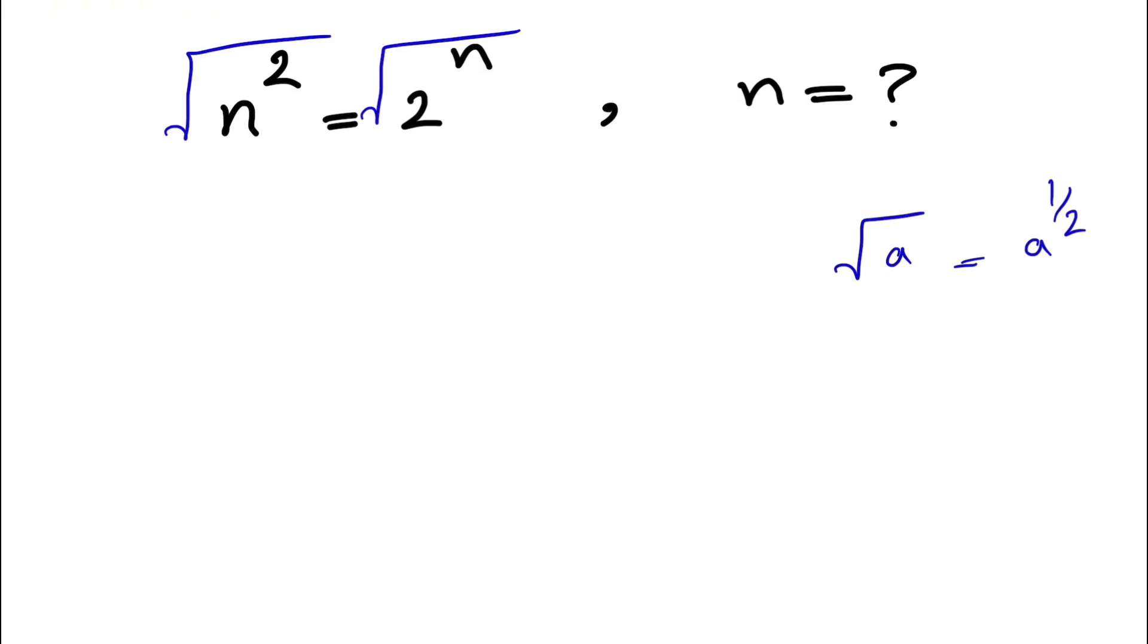So basically we have the same thing here and if we do the square root on each side, we have n to the power of 2/2 and on the other side of the equation, we have 2 to the power of n/2.